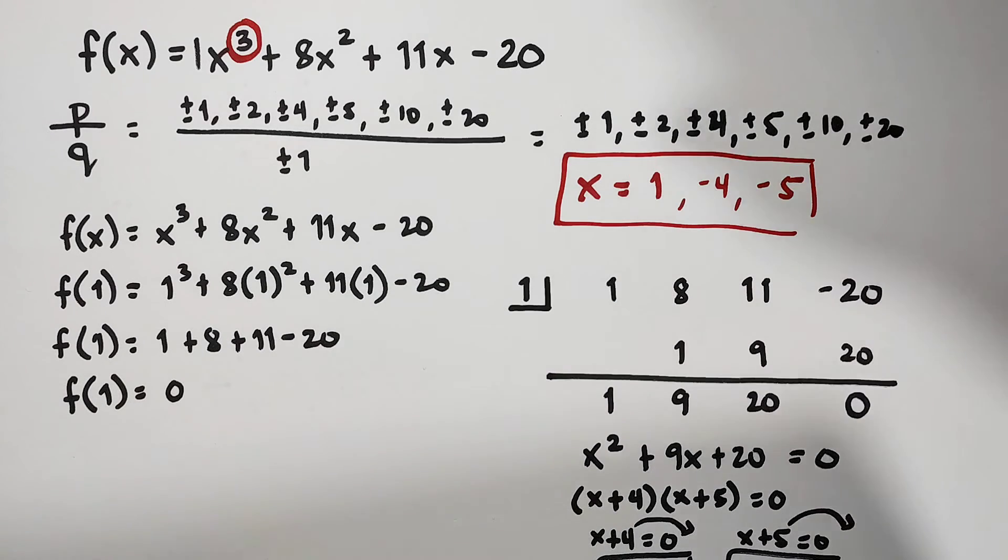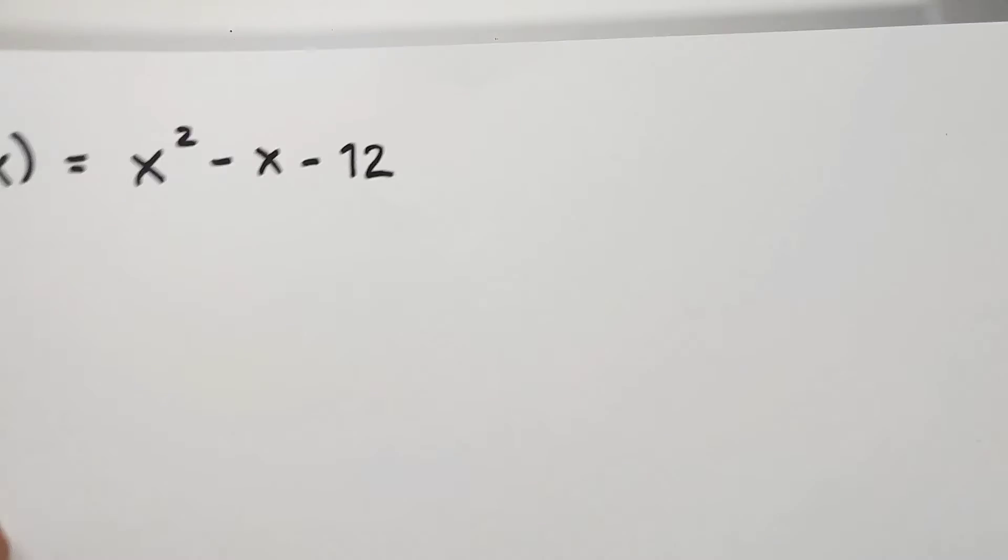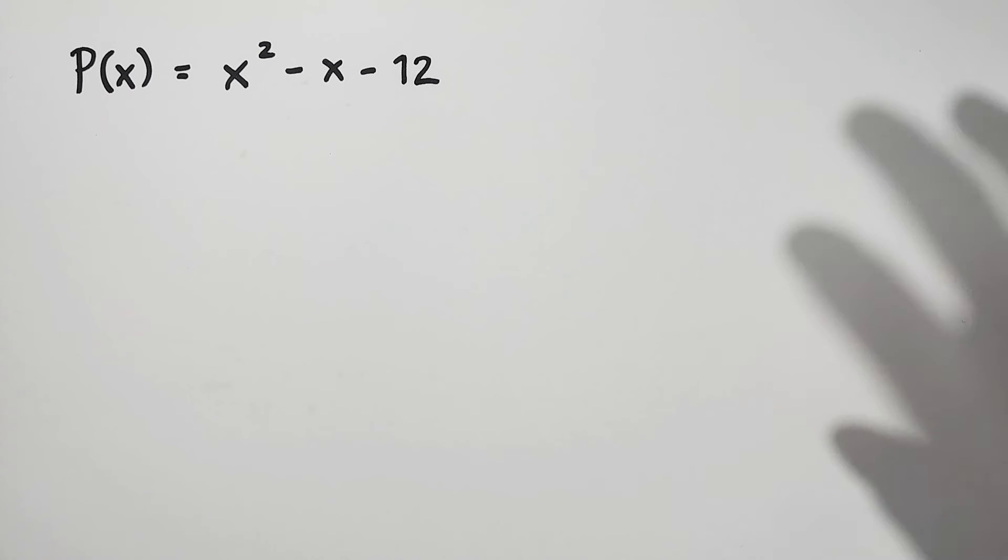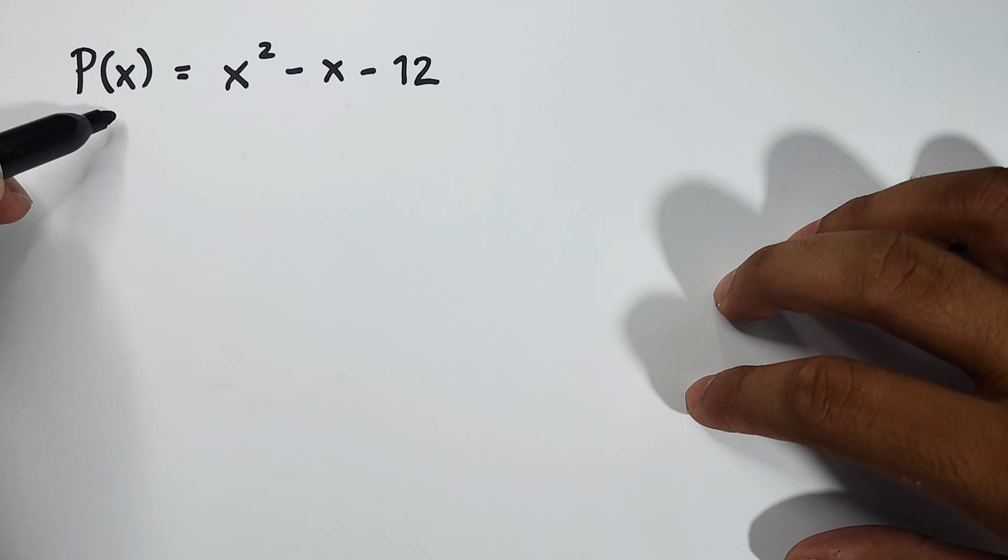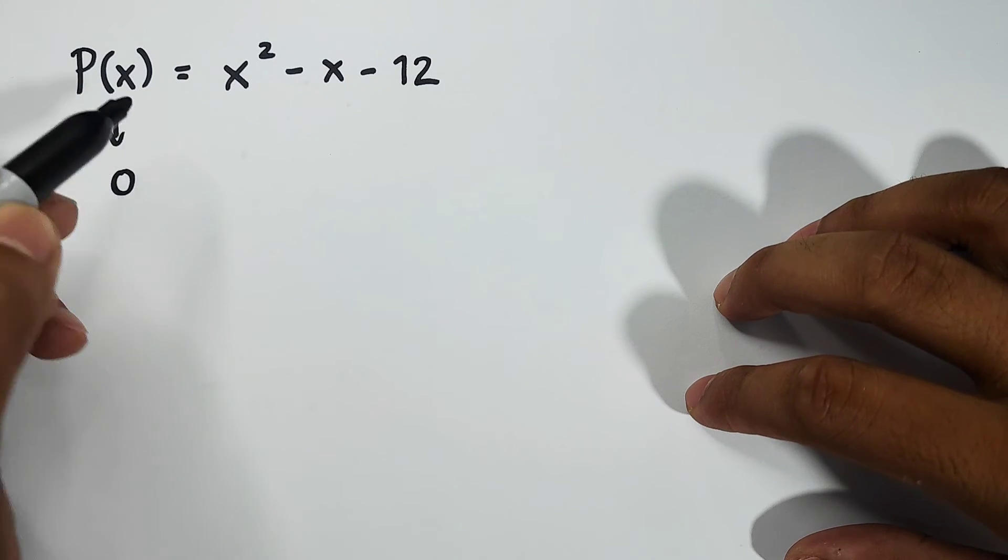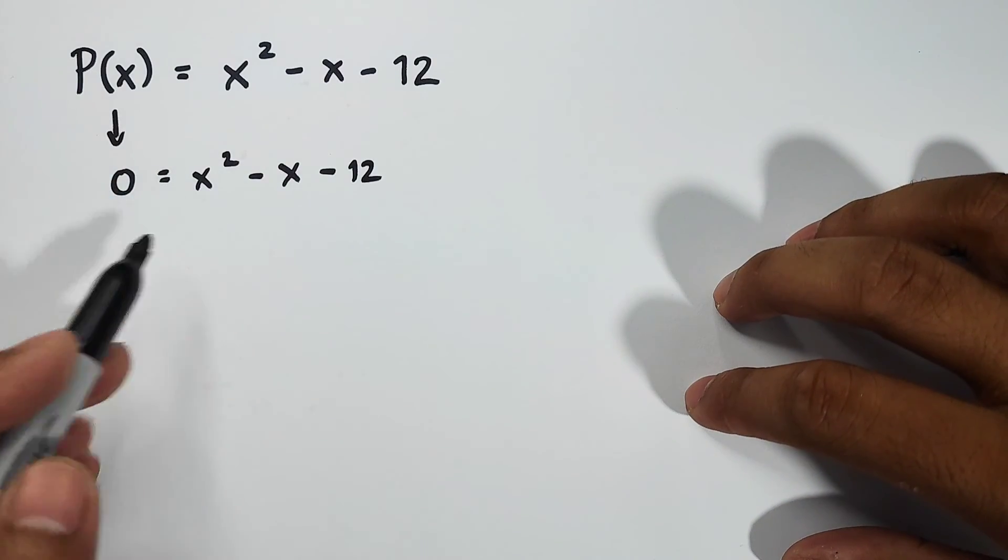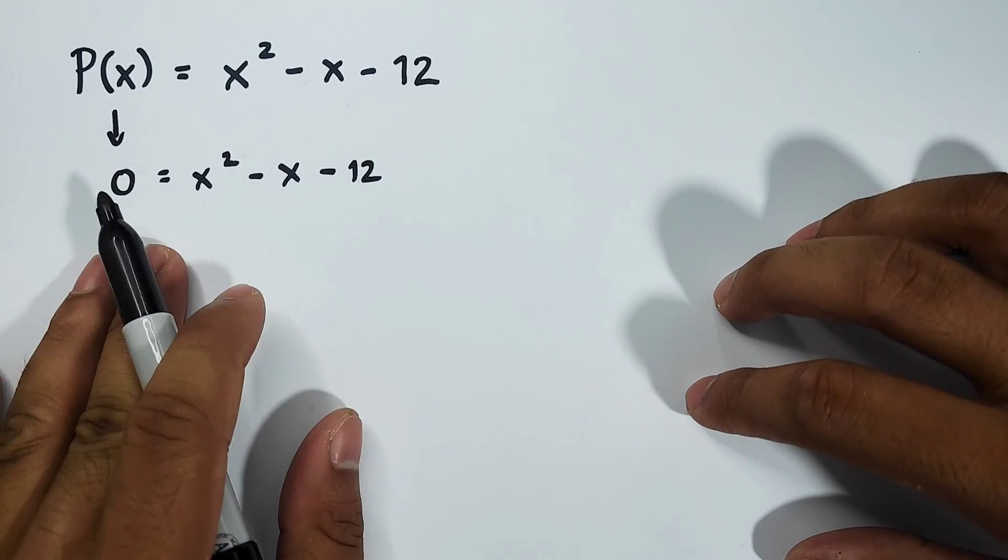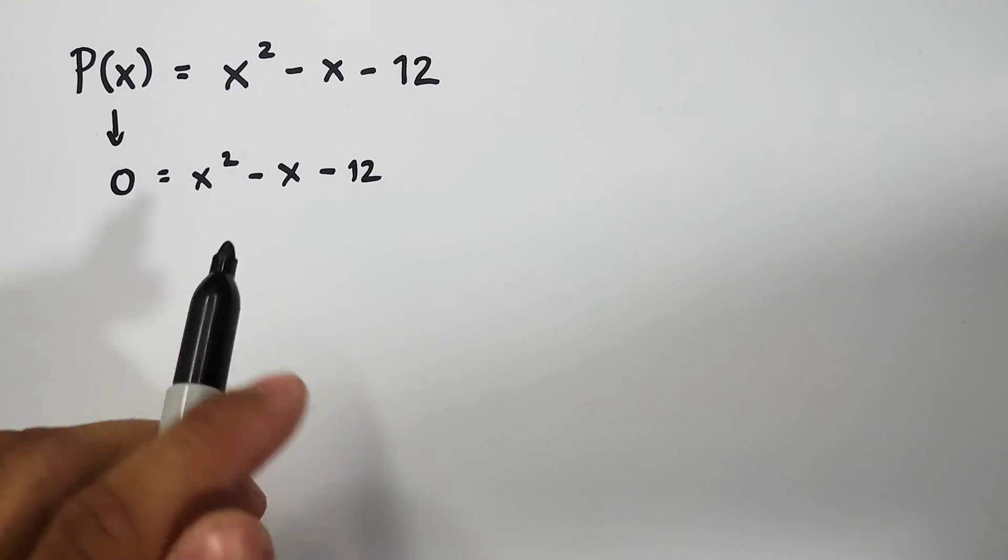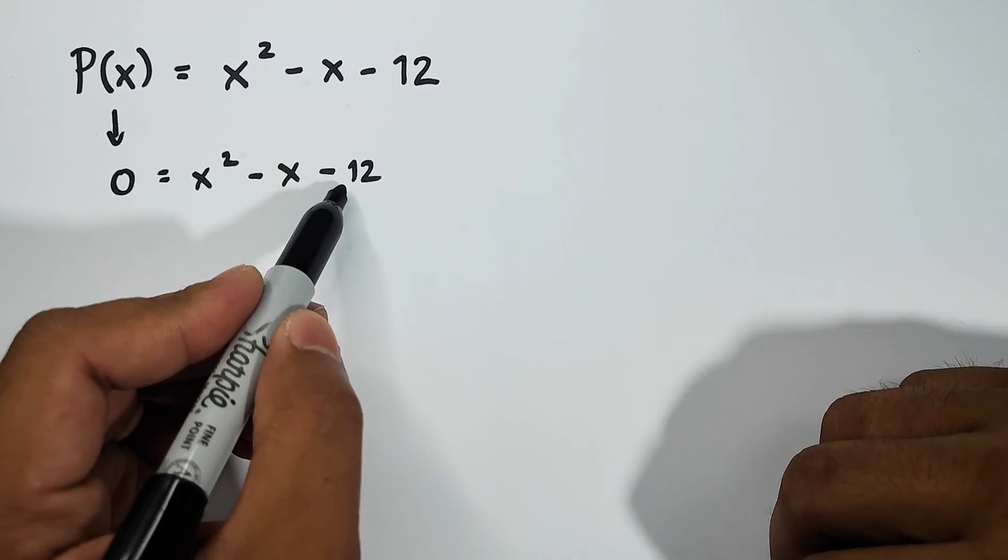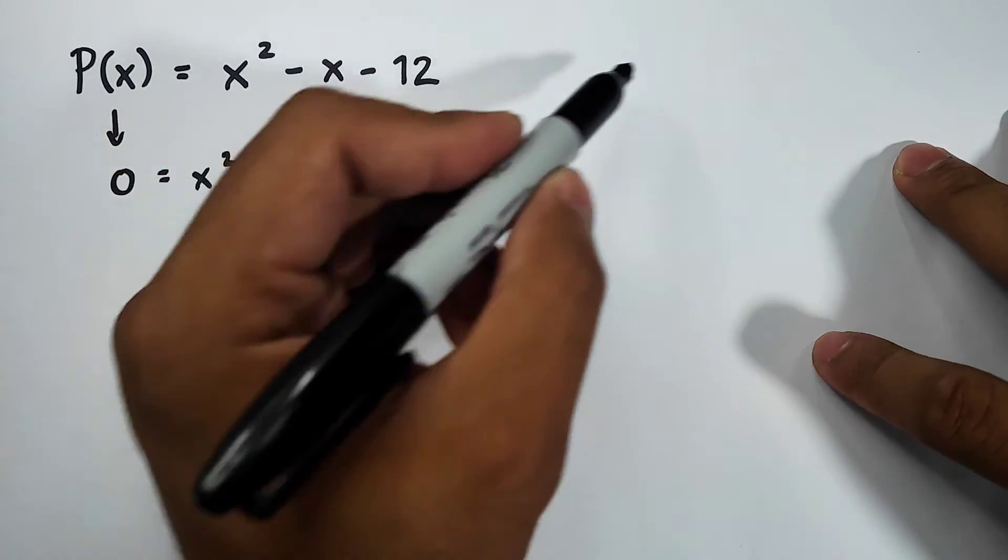Now let's move on here and find the zeros of this function. What we have here is P(x) = x² - x - 12. So here, what we need to do is to make this zero: 0 = x² - x - 12. I made it like that because this is already quadratic, and I noticed that we can easily factor out this equation.